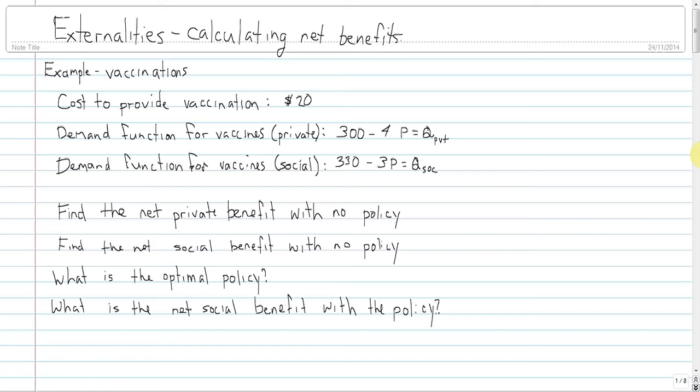In this case we're looking at a positive externality, vaccinations. We're going to calculate private and social benefits, calculate an optimal policy, and find the net social benefit with that policy.